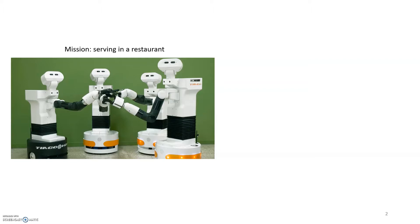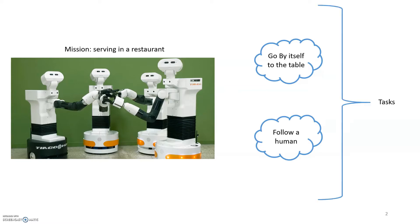Robotic missions consist of different tasks or behaviors that need to be coordinated. For Tiago, in order to serve its mission of delivering an order to a table, it can either execute the task of going by itself to the table if its location is known, or follow a human to the table. These tasks are typically programmed at a relatively low level of abstraction, but what's important for the success of a robotic mission is the right coordination between these tasks or behaviors.